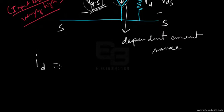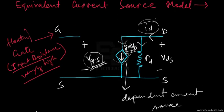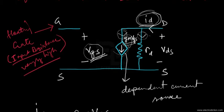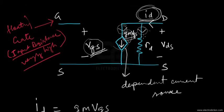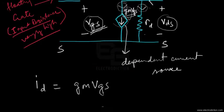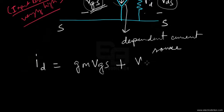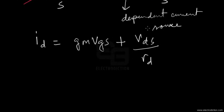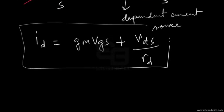We can write an equation for the AC drain current ID. That's ID = G_M · V_GS plus the current component through R_D. Adding them together gives ID = G_M · V_GS + V_DS / R_D. This is the equation obtained from this model, and it introduces two new terms: G_M and R_D.